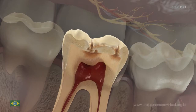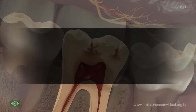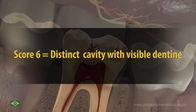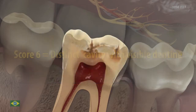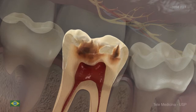Score 5: A cavitation due to caries in opaque or discoloured enamel exposing the dentin. These lesions extend over less than half of the tooth's surface. Score 6: An extensive distinct cavity with visible dentin involving at least half of the tooth's surface or the pulp.